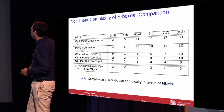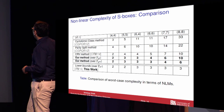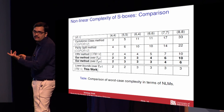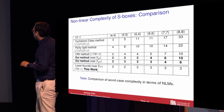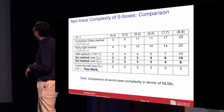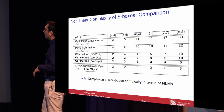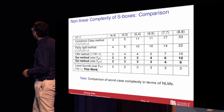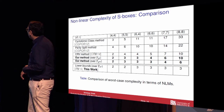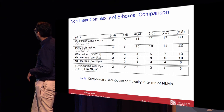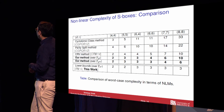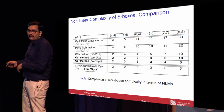Working over F2 power 8 gives no improvement for 8-to-8-bit S-boxes — it's the same as the CRV method. But from a theoretical point of view, it's interesting to note that while working over F2 power 16, we can reduce the multiplicative complexity to 6 from 10. And we will see later in the talk that we can even reach 3.